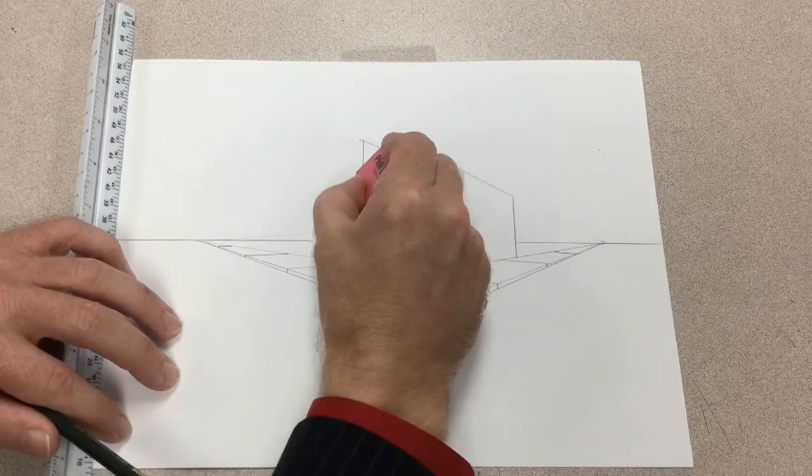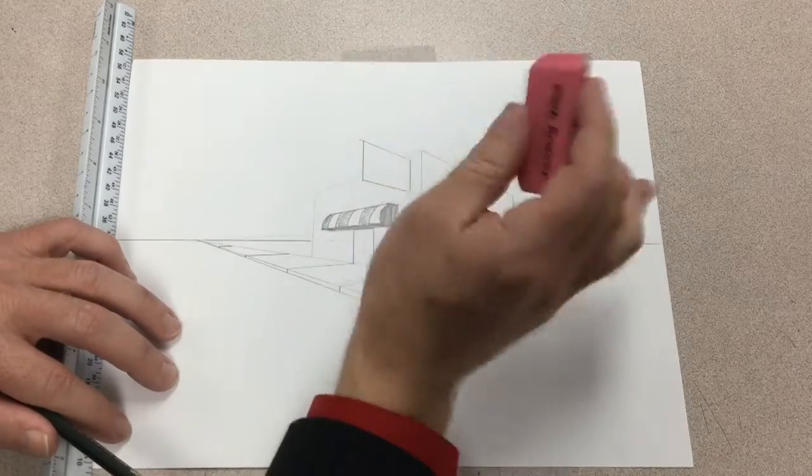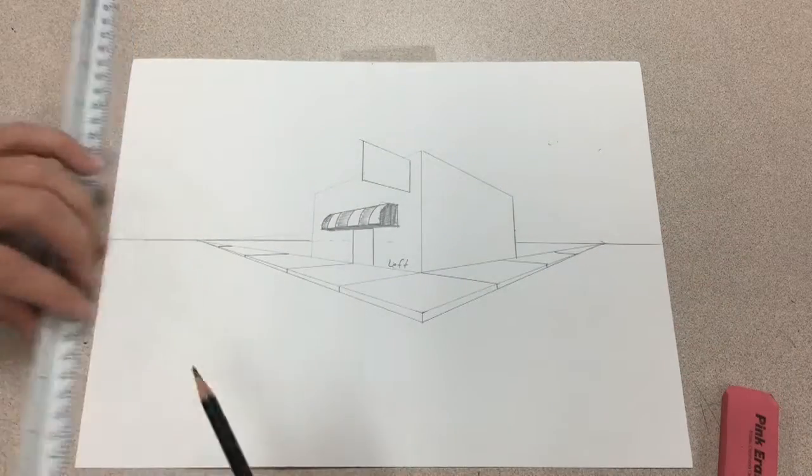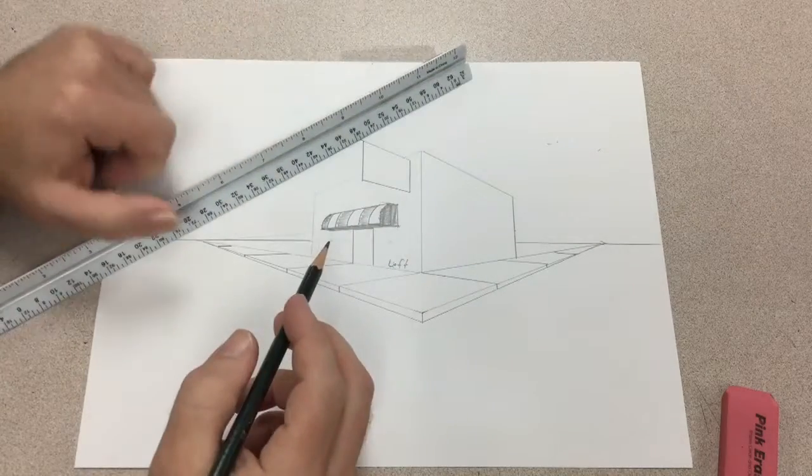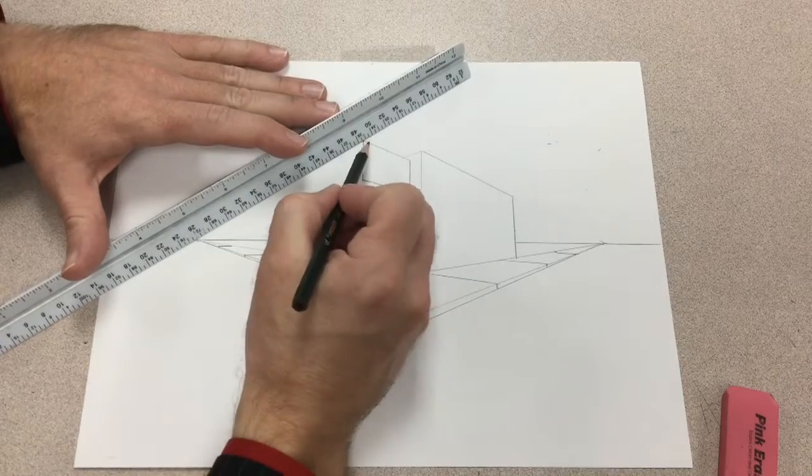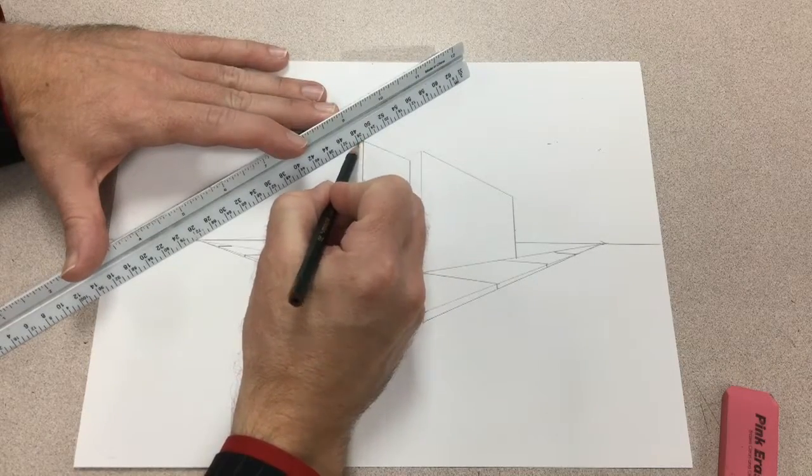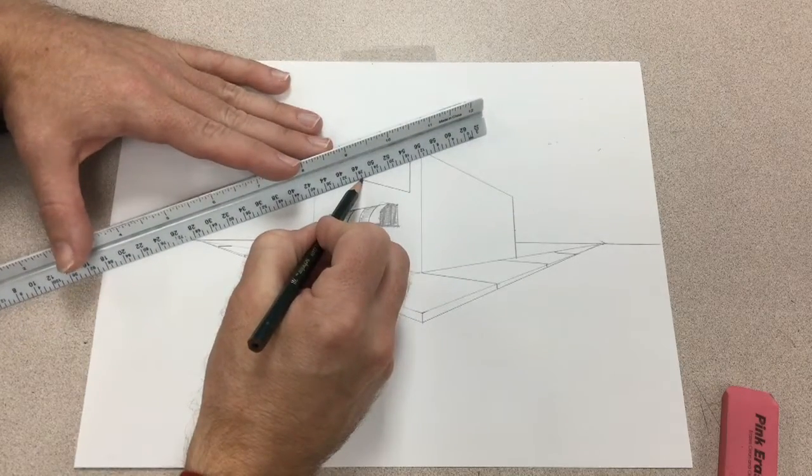I'm going to erase this rough line in here. Now I want to make it a little bit more three-dimensional, so I'm going to take my three closest corners and I'm going to take them back to my left vanishing point.